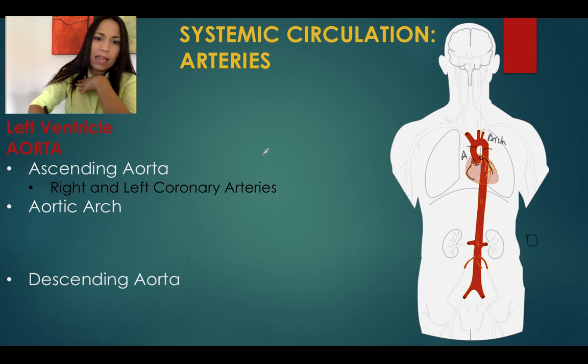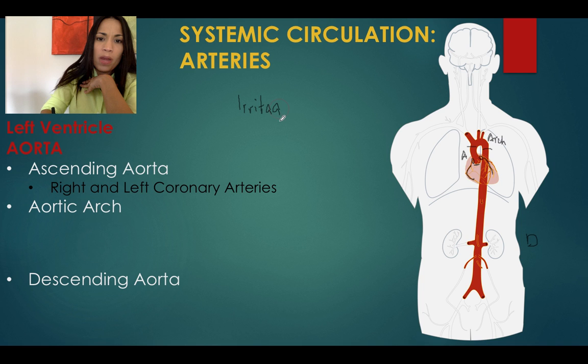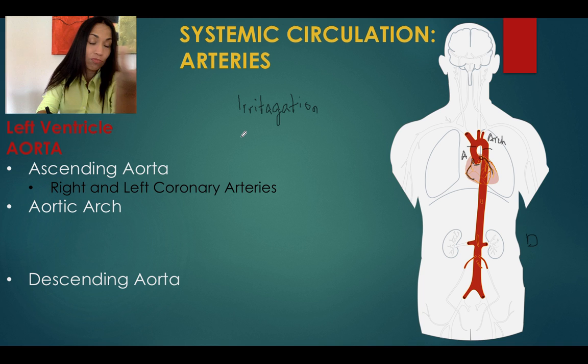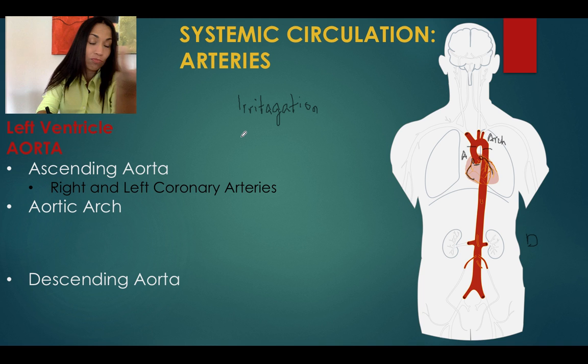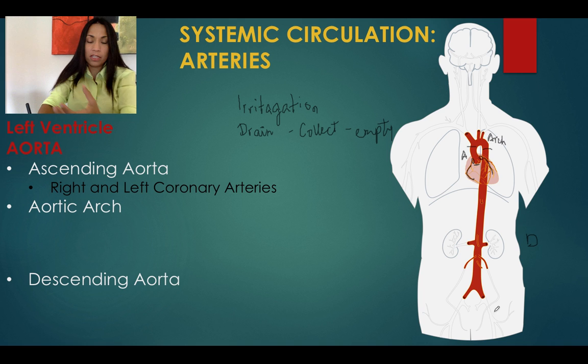There are terms we're going to be using back and forth. One is irrigation — when you irrigate your grass at home, you're giving it water. Irrigation here means you provide or supply blood to the tissue. And when you drain that water, in anatomy we can also say we drain, collect, or empty that blood from the tissue and send it back to the heart through veins.